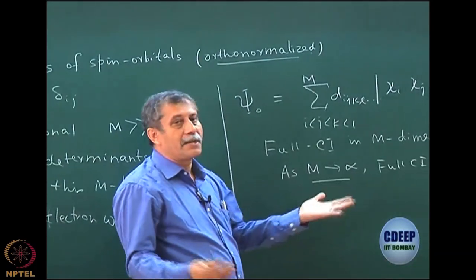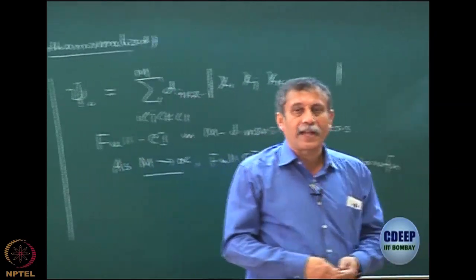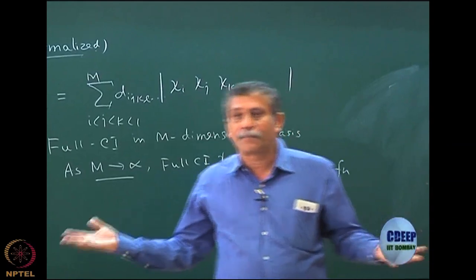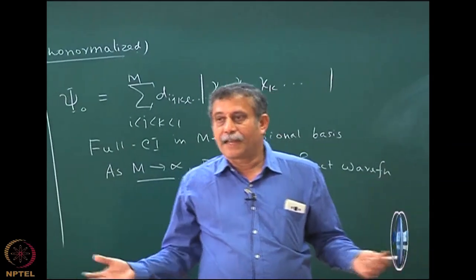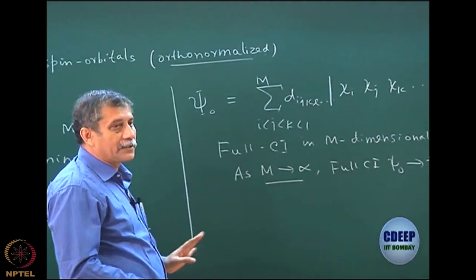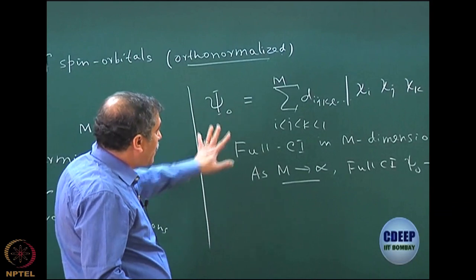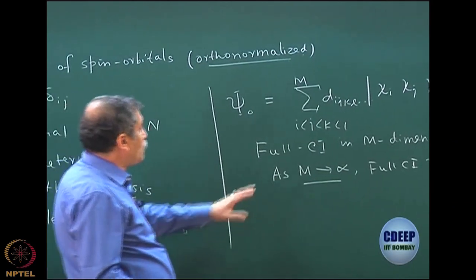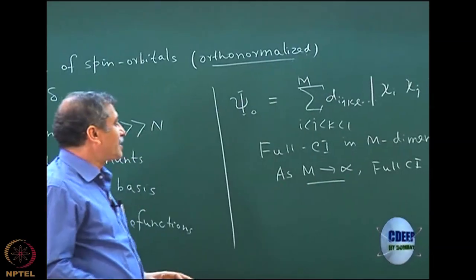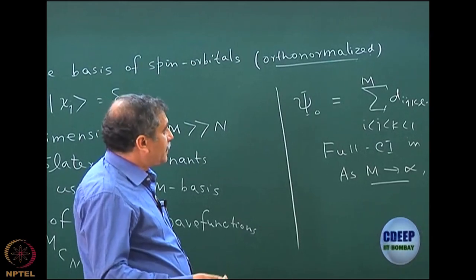This is what is called the CBS limit — complete basis set limit — which essentially means that m cannot be infinity, but m is sufficiently large that it is almost complete. If I now take all the CI functions, it is an exact function. We will come back later to discuss how to get the coefficients and energies when we discuss the full CI wave function method. At this point, I just wanted to mention that even if the Hamiltonian is interacting, there is a form of an exact wave function which is possible.